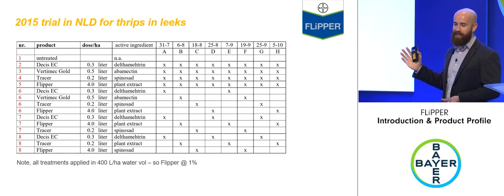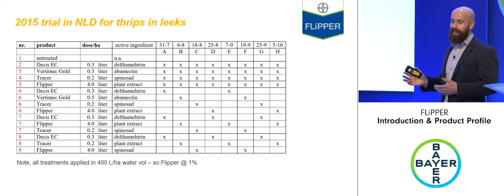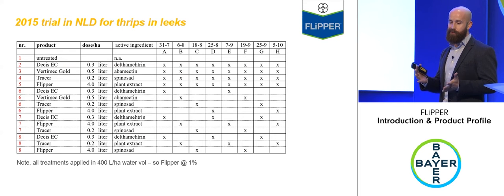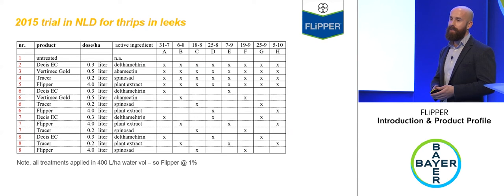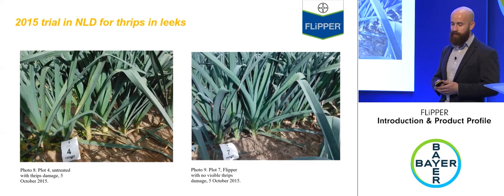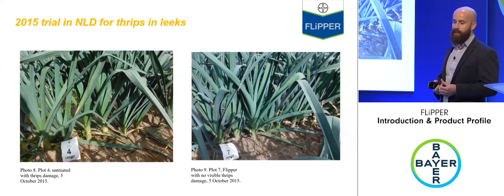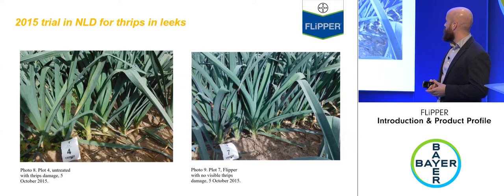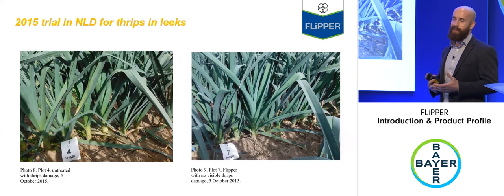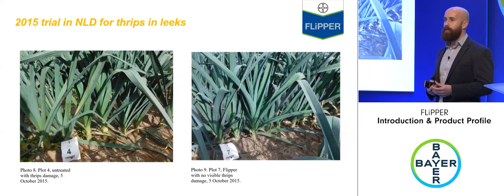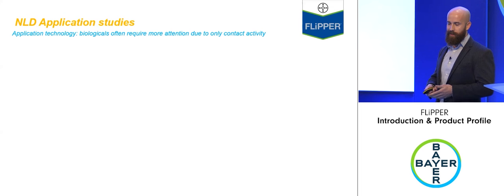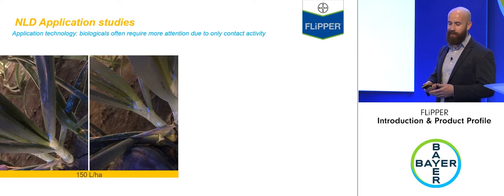A 2015 Netherlands trial on thrips in leeks compared eight-spray programs: Desis, Vertimec, Tracer, and Flipper as straights, plus combination programs. The results showed untreated plots with heavy thrips damage, while Flipper-treated plots looked absolutely clean. For a crop like leeks, where any damage renders them unmarketable, these results are very exciting.